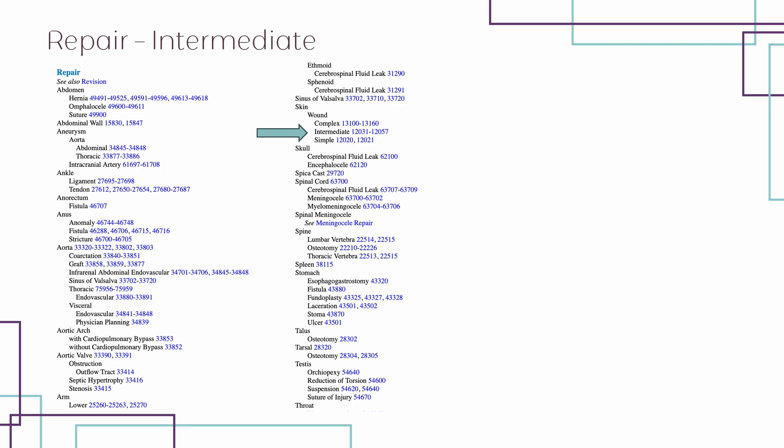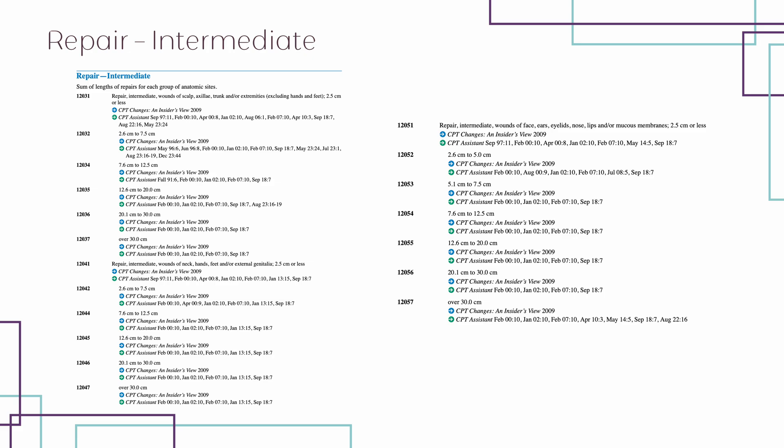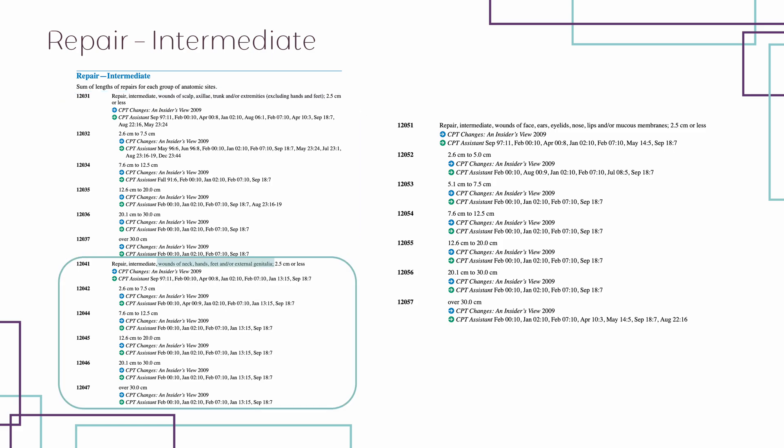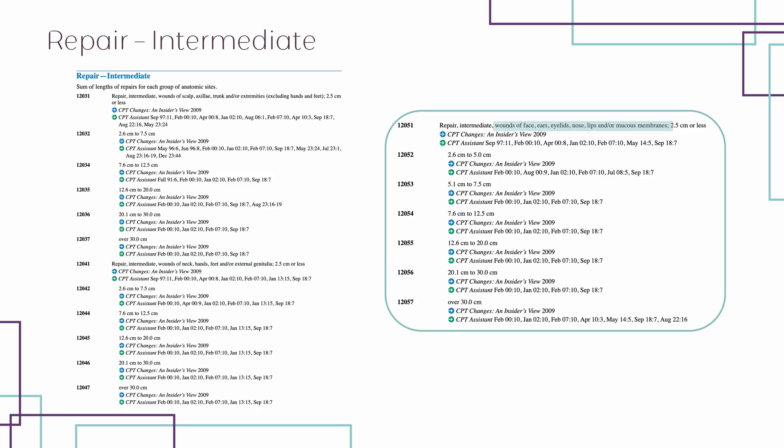Looking at the intermediate repair codes 12031 through 12057, there are three code families. The first is for wounds on the scalp, axilla, trunk, and extremities excluding hands and feet — the cheek does not fall here. The second is for wounds on the neck, hands, feet, and external genitalia — the cheek does not fall here either. The third and last family is for wounds on the face, ears, eyelids, nose, lips, and mucous membrane — the cheek does fall here.